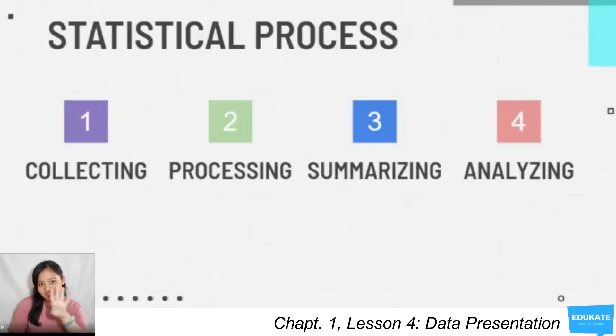Recalling, our statistical processes consist of four methods: collecting, processing, summarizing, and analyzing data. Last lesson, we discussed collecting and processing data. For now, we are going to discuss summarizing data and a bit of analyzing as well.